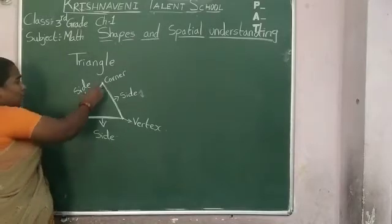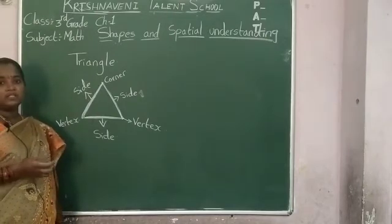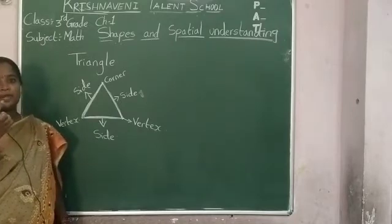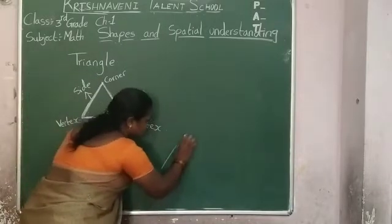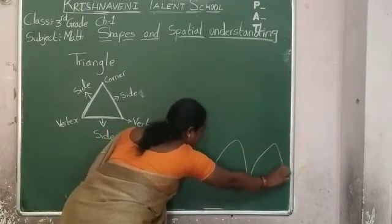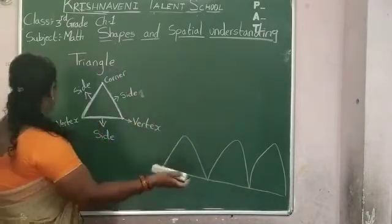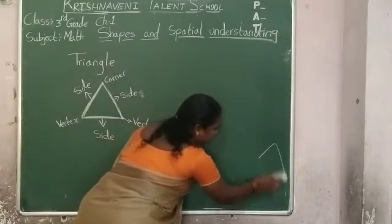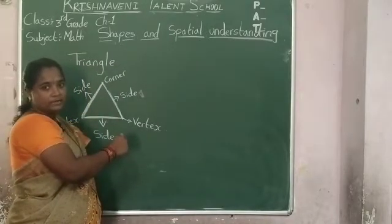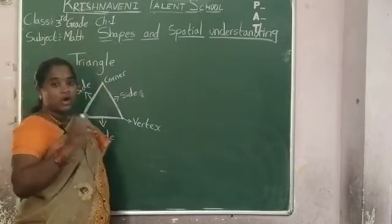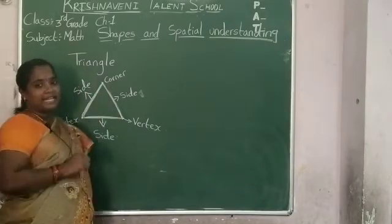Every triangle has 3 sides and 3 corners. One example of a triangle in our daily life is a samosa — samosa is an example of a triangle. Next, the surface of a mountain. Mountains are like this — these are also examples of a triangle. Corners are also called vertices. Remember this point.